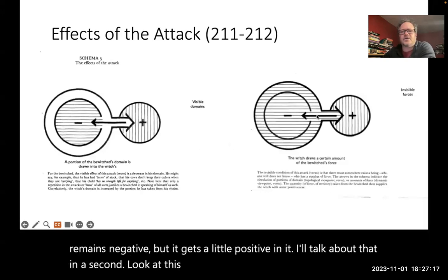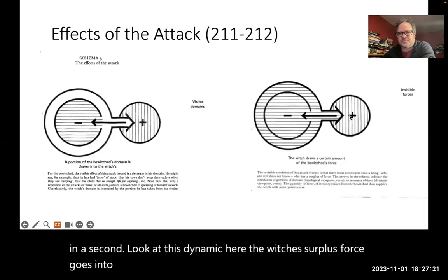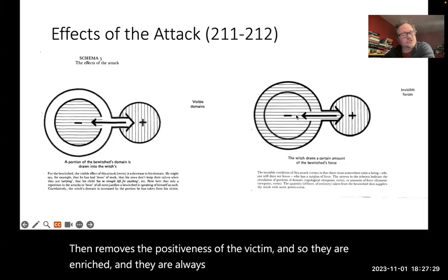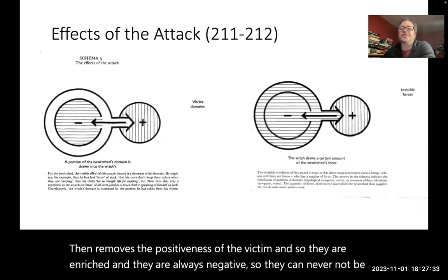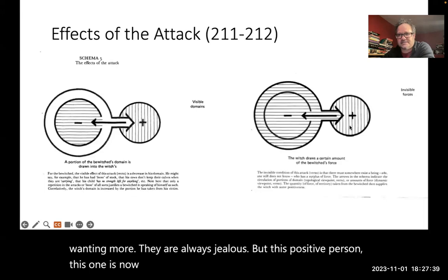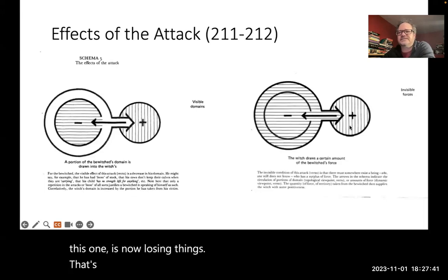Look at this dynamic here. The witch's surplus force goes into their victim, then removes the positiveness of the victim. And so they are enriched, and they are always negative, so they can never not be wanting more. They are always jealous. But this positive person, this one is now losing things. Their positiveness is being depleted.